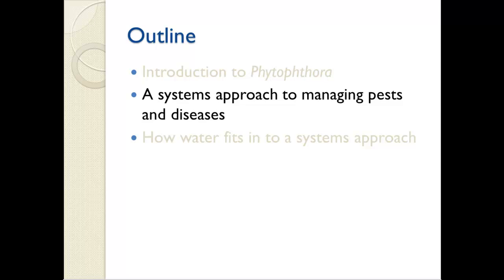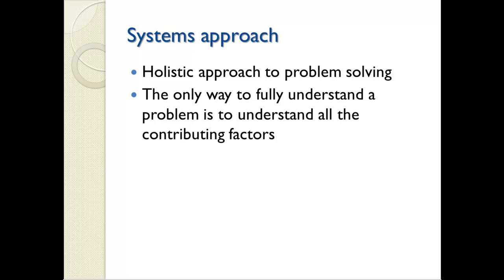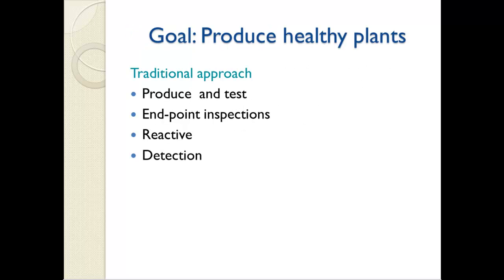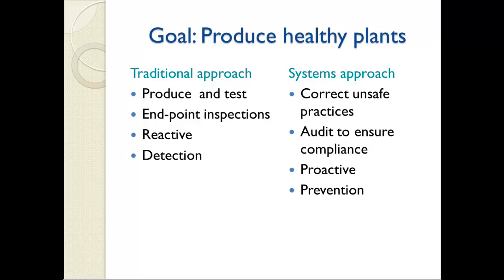The systems approach is a holistic approach to problem solving, based on the notion that the only way to fully understand a problem is to understand all the contributing factors. Consider the goal of producing healthy plants. In the traditional approach, a grower produces and tests the plants, and then the plants are inspected right before they're shipped — an endpoint inspection, which is a reactive approach based on detection of diseased plants. In a systems approach, a grower would instead correct unsafe practices to ensure that plants could not become contaminated. It's a proactive approach based on prevention.